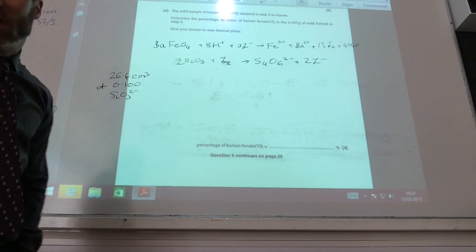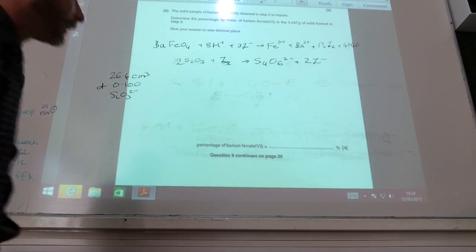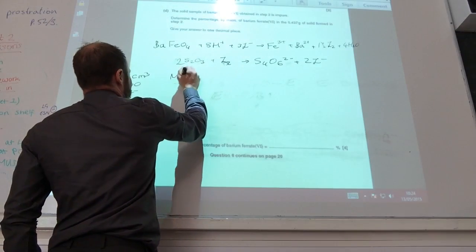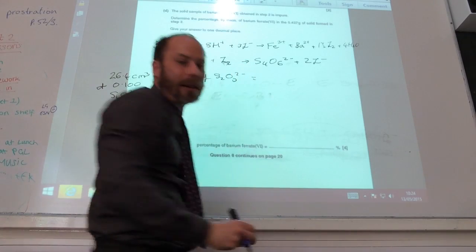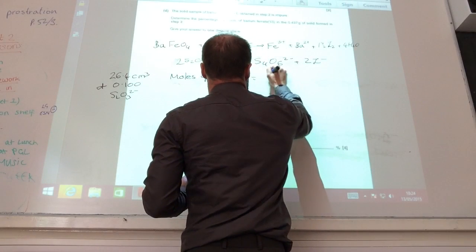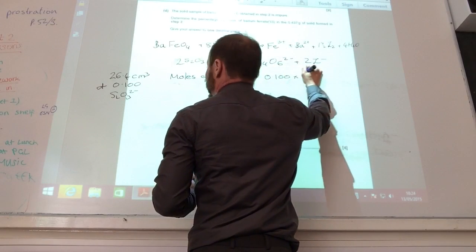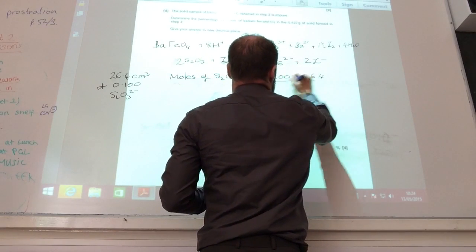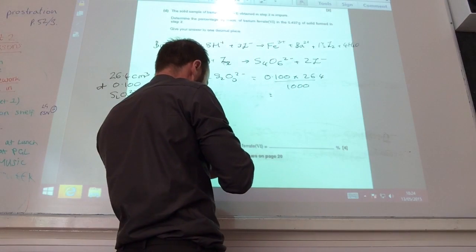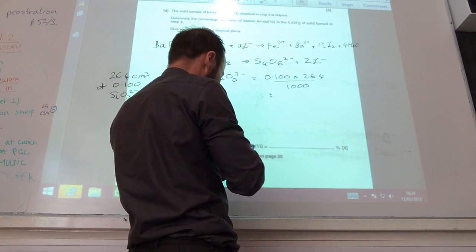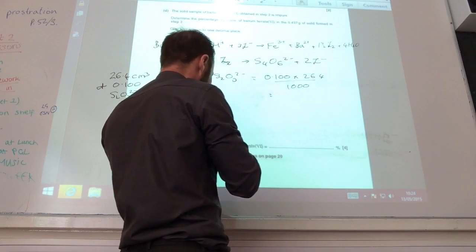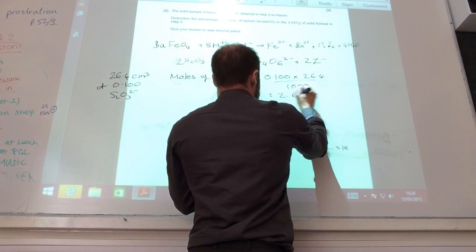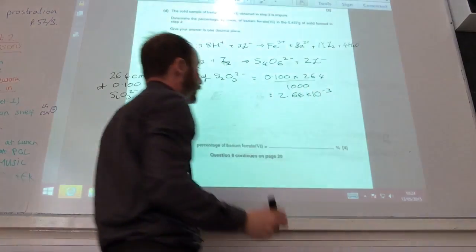If you look back, they've told me a volume and a concentration of thiosulfate. So what can I work out first of all? I can work out moles of S2O3^2-. That is going to equal concentration times volume over 1000. So 0.1 times 26.4 divided by 1000.